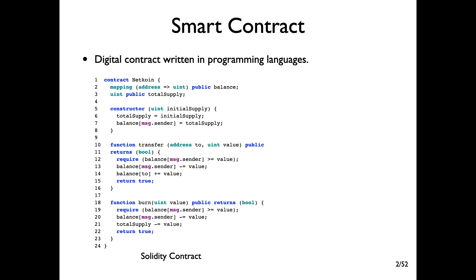Smart contracts are digital contracts written in programming languages. In the slide, you can see a smart contract written in Solidity, the most popular language for writing Ethereum smart contracts. I will briefly introduce Solidity smart contracts using this example.